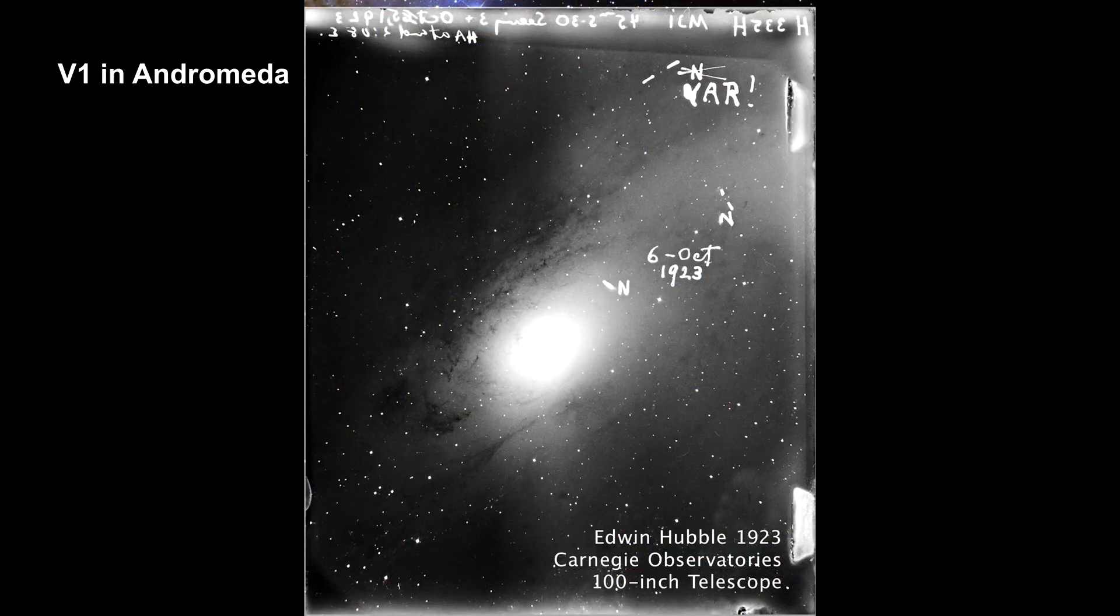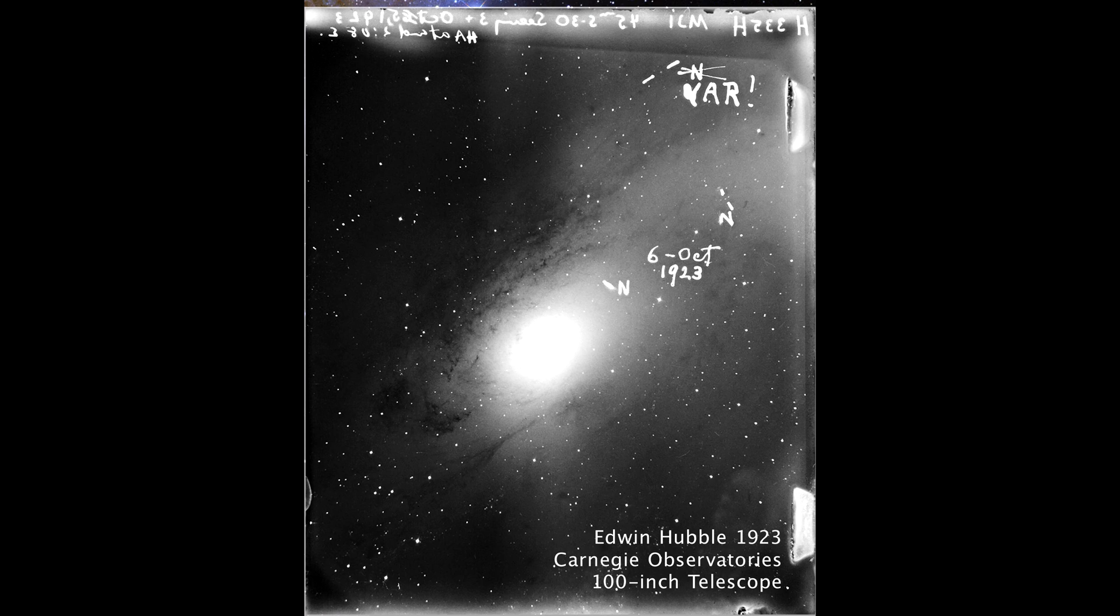Here's Edwin Hubble's image of Andromeda, which was made on a 4-by-5-inch glass plate and dated October 6, 1923. He originally identified three stars and marked each of them with an N for Nova, a class of exploding star.